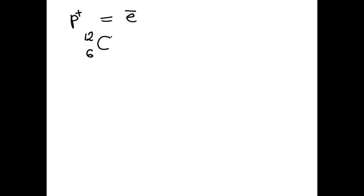Suppose we have carbon. Carbon's atomic mass is 12 and atomic number is 6. The atomic mass is denoted by A, and A is made up of the number of protons plus neutrons — that gives us the mass number. The atomic number, denoted by Z, is 6.